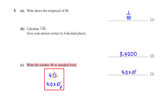Write the number 40 in standard form. We move the decimal point to after the first non-zero digit, which is 4, giving 4.0. Since we moved the decimal point one unit to the left, we multiply by 10 raised to the power 1, so the answer is 4.0 × 10¹.